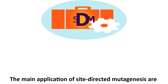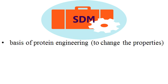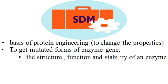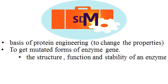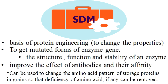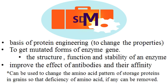The main applications of site-directed mutagenesis are: it is the basis of protein engineering; to get mutated forms of enzyme genes and study the structure, function, and stability of an enzyme; it is used to improve the effect of antibodies and their affinity; and it can be used to change the amino acid pattern of storage proteins in grains so that any deficiency of amino acids can be removed.